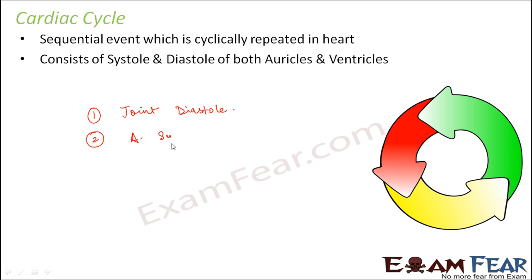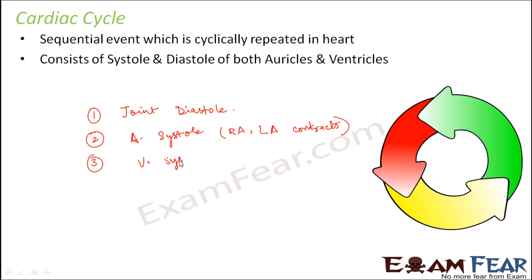The second step is auricular systole, which is initiated by the SA node generating an electric impulse. In this step, both the right auricle and the left auricle contract. This auricular systole is later followed by ventricular systole, when both the right ventricle and left ventricle contract. This happens when the impulse generated by the SA node reaches the AV bundle and the Purkinje fibers.